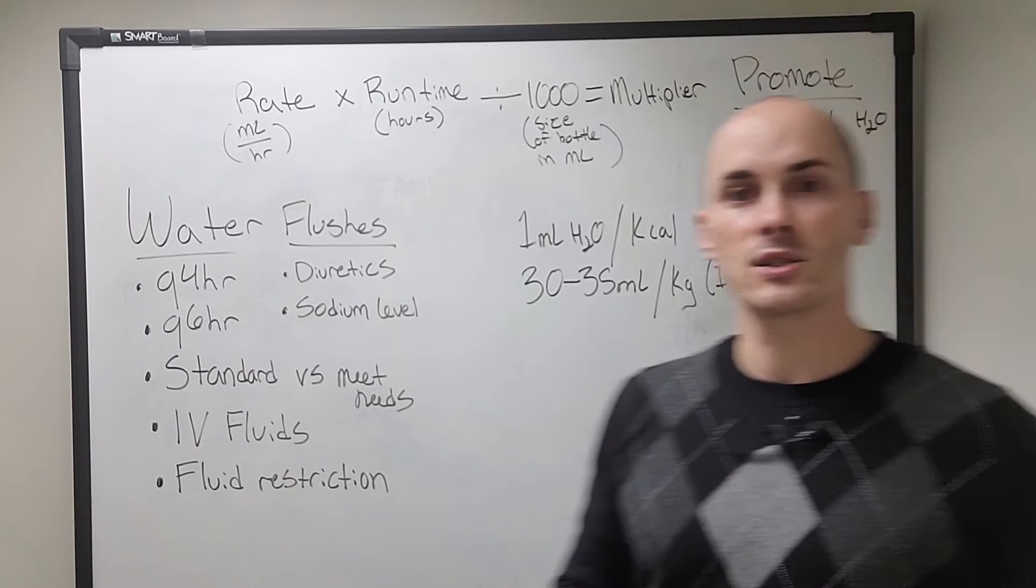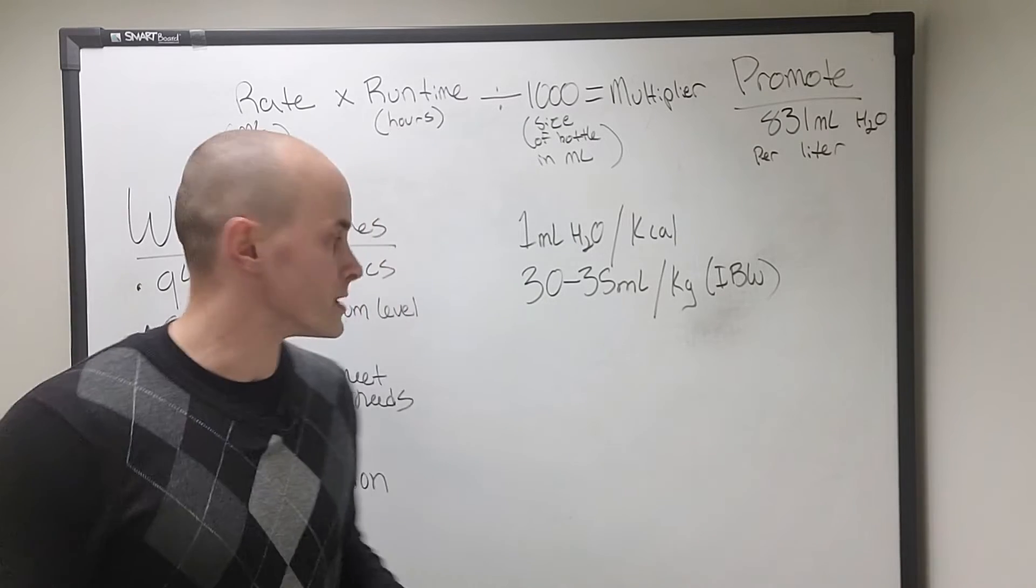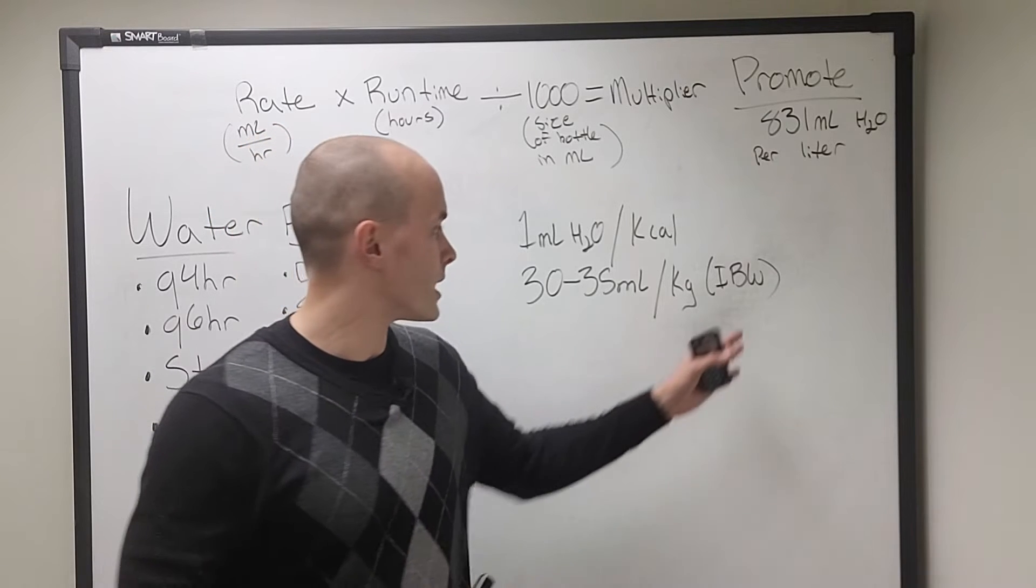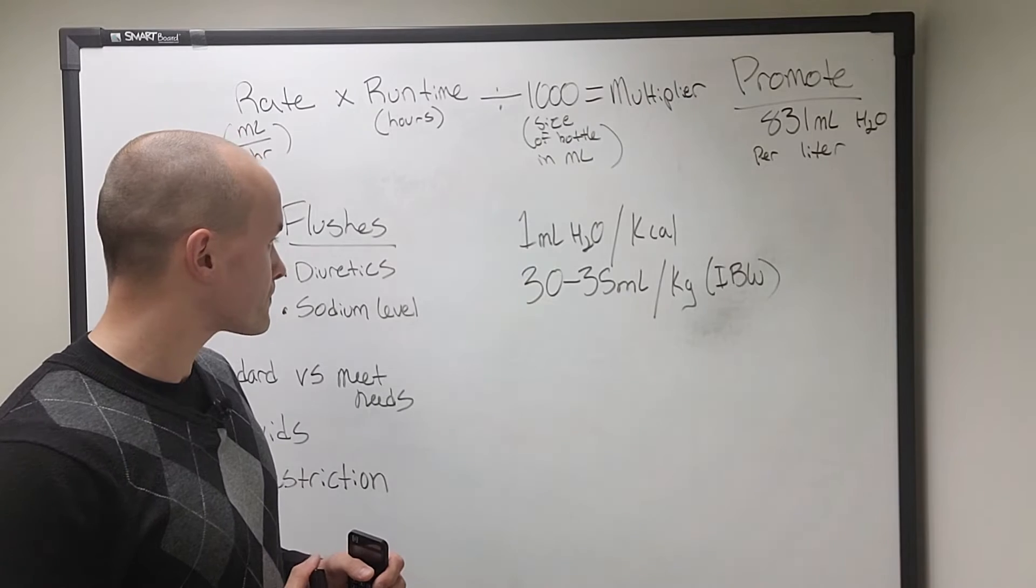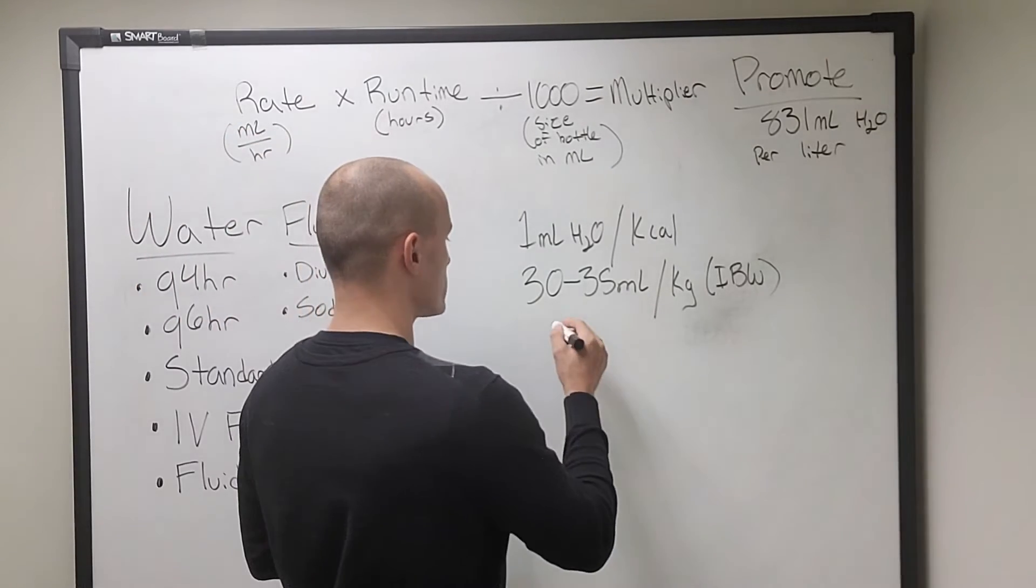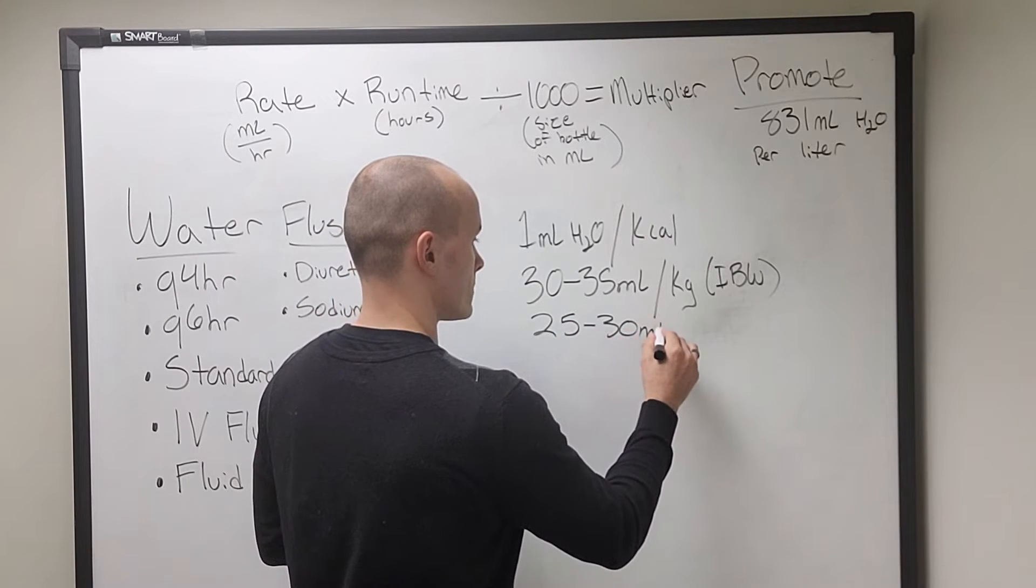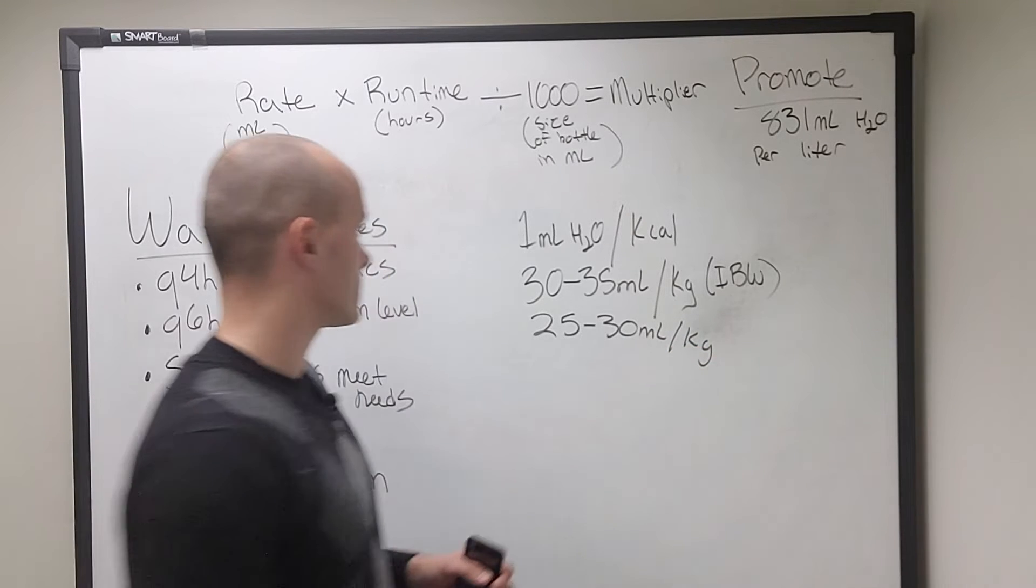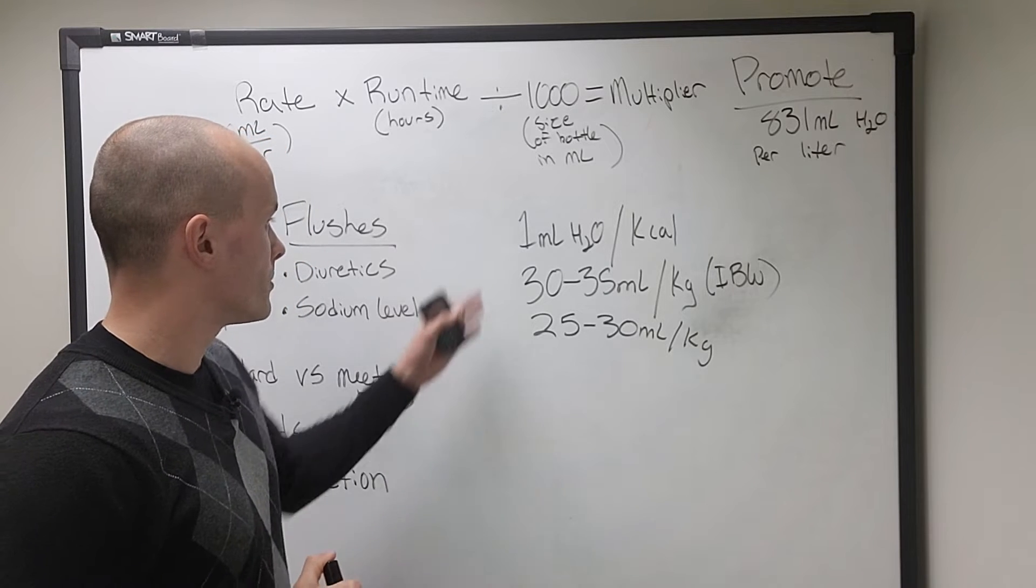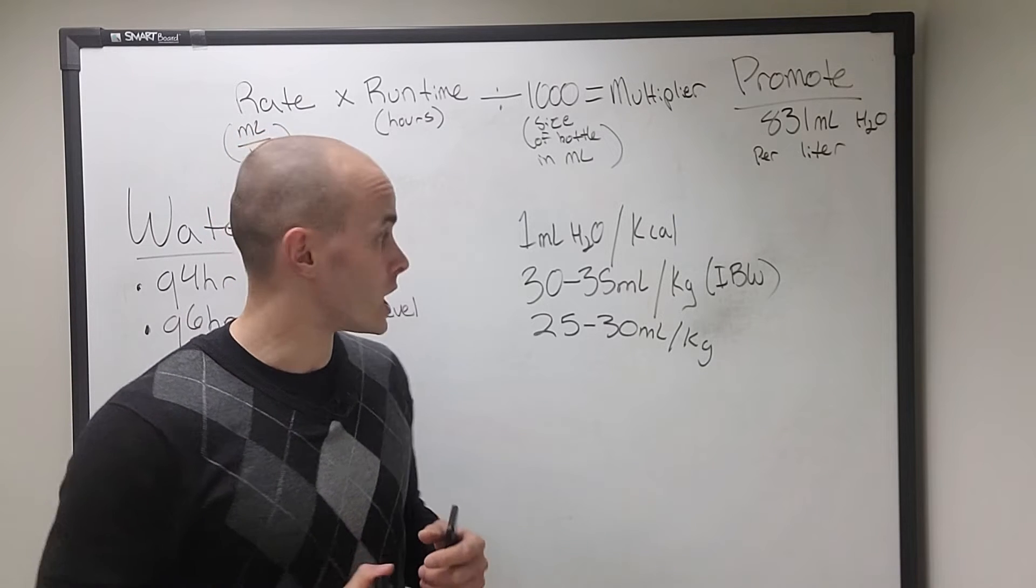If you have a patient that's obese then their water needs would just be way too high. So using an ideal body weight could be a way to figure out their hydration needs. If they're a little bit older, let's say they're 70 or older, you could drop this number down to 25 to 30 milliliters per kilogram. There's other formulas out there but these are sort of the basic ones that we use here in the hospital.